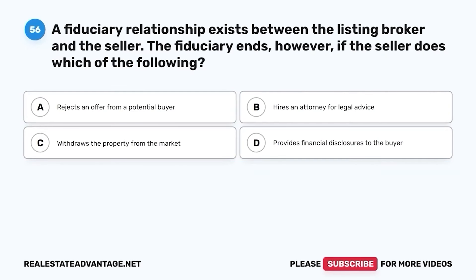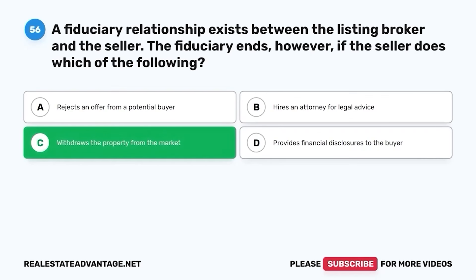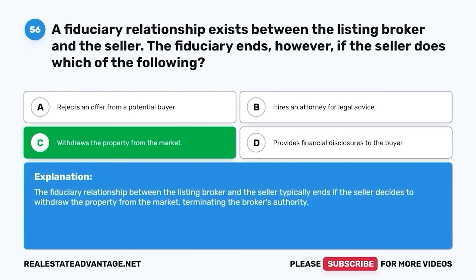Question 56. A fiduciary relationship exists between the listing broker and the seller. The fiduciary ends, however, if the seller does which of the following? A. Rejects an offer from a potential buyer. B. Hires an attorney for legal advice. C. Withdraws the property from the market. D. Provides financial disclosures to the buyer. The correct answer is C. Withdraws the property from the market. The fiduciary relationship between the listing broker and the seller typically ends if the seller decides to withdraw the property from the market, terminating the broker's authority.